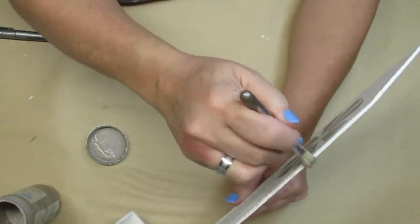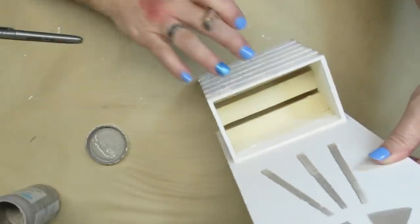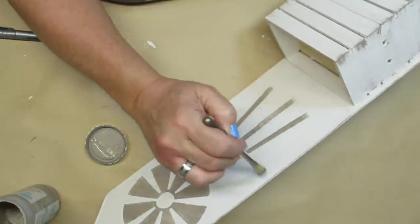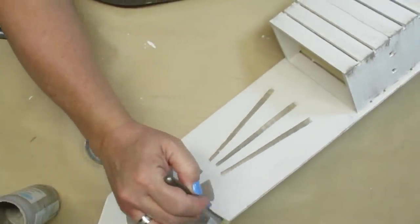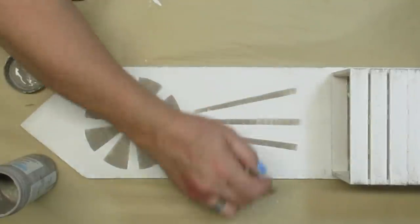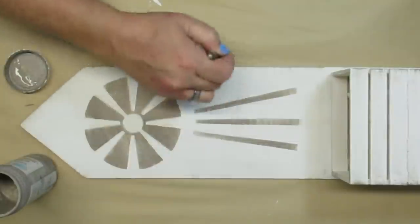I'm going to do that for this side and then I'm going to turn it around and do it on the other side as well. Now I'm going to very lightly go across the sign. I do want some distressing but I don't want it to be very heavy.